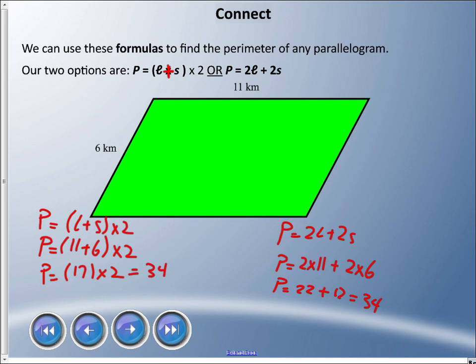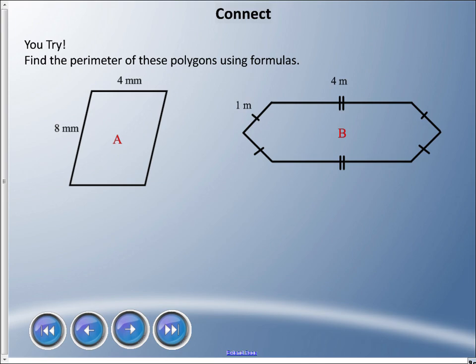So perimeter P equals 34 kilometers. If you're my student, you won't get full marks if you just write 34 — always include the unit. Now I'm going to have you try this. I'm throwing you a curve ball with polygon B, but see if you can figure out your own rule. What is the perimeter of these polygons?